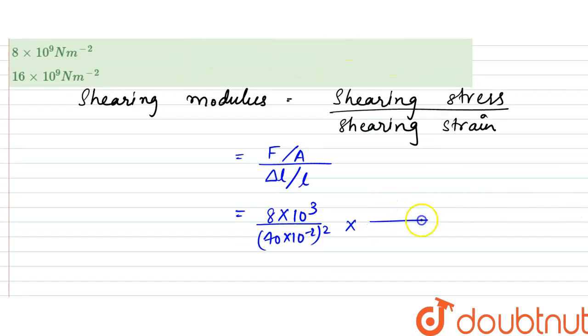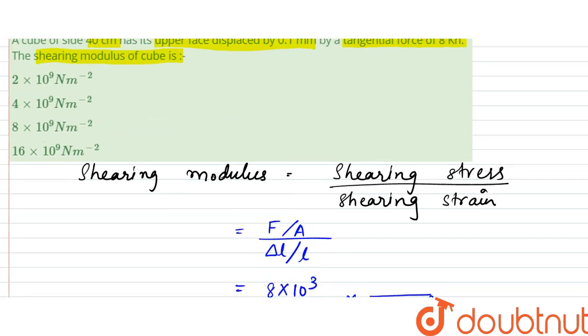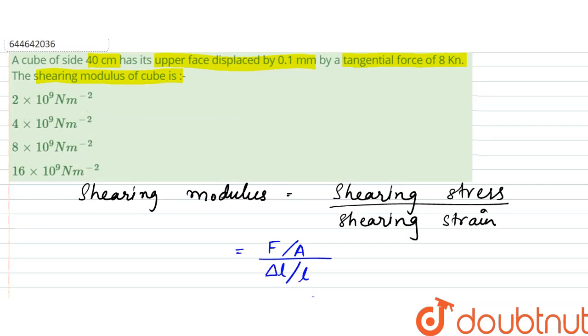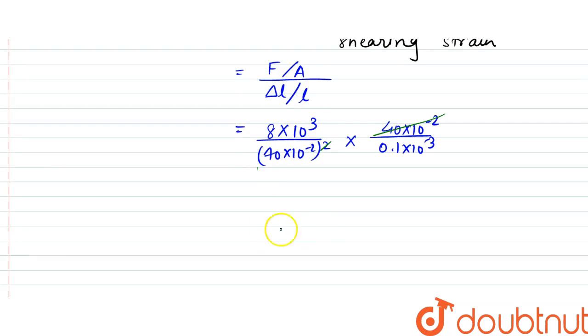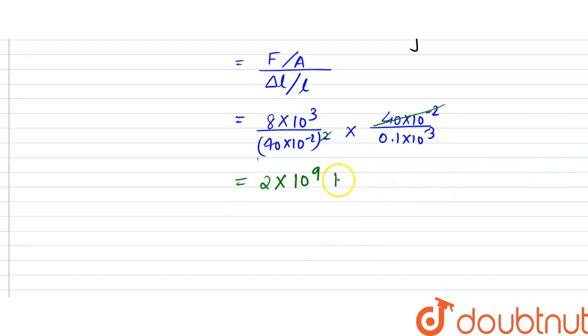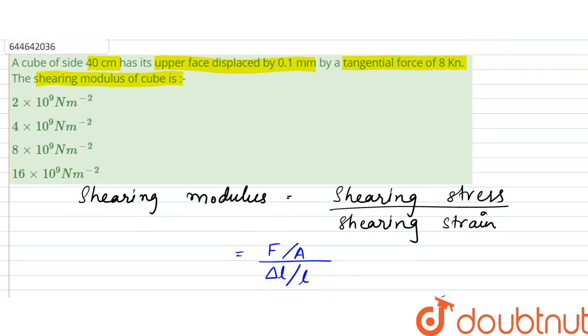The upper face is displaced by 0.1 millimeter, so it is 0.1 × 10⁻³ meters divided by 40 × 10⁻² meters. When we calculate this value, it turns out to be 2 × 10⁹ newtons per meter squared. So our answer would be option A.